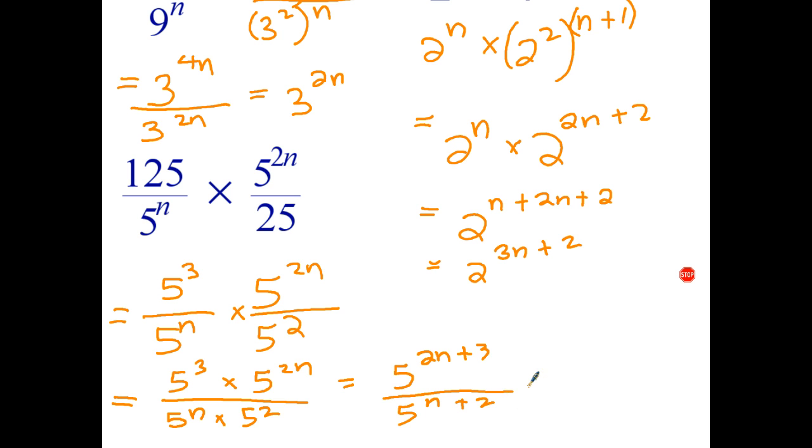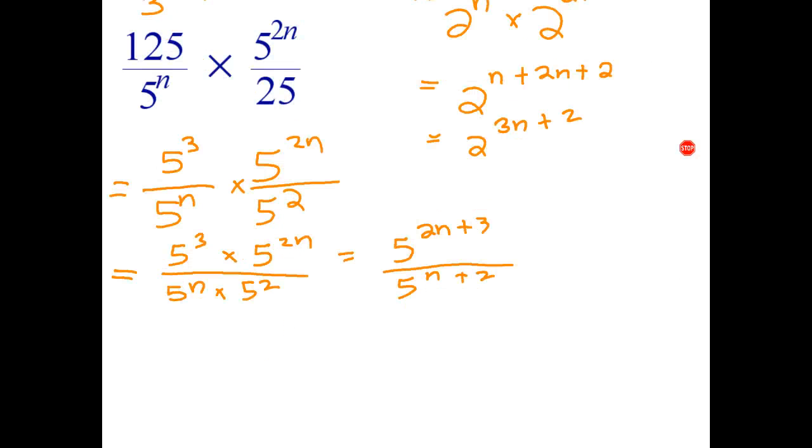Okay we're almost there. I'll give myself a bit more space again. Now one last step: to divide powers with the same base, subtract indices. That becomes 5 to the 2n plus 3 minus n plus 2.